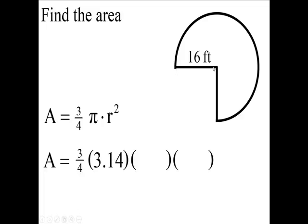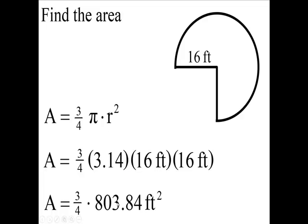I have three-fourths the total area of the circle. If you take 16 times 16, that's 256. 256 times π, 3.14, gives you 803.84, and it's feet times feet which is square feet.